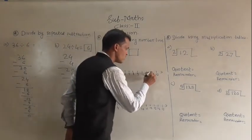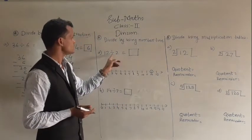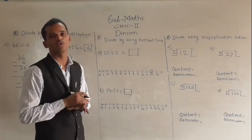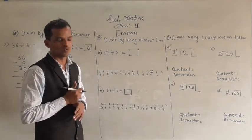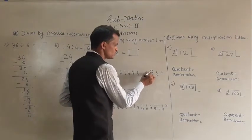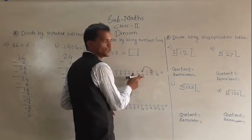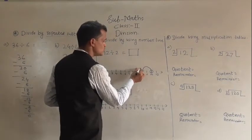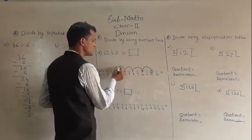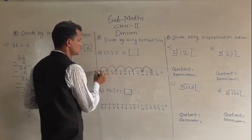Where is 12 on the number line? Here is 12. And 2 is the divisor, meaning every time you have to subtract 2 from 12. Go 2 steps backward each time: 12 minus 2 is 10, 10 minus 2 is 8, 8 minus 2 is 6, 6 minus 2 is 4, 4 minus 2 is 2, and 2 minus 2 is 0.